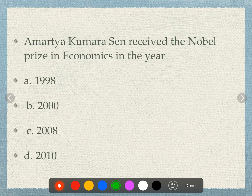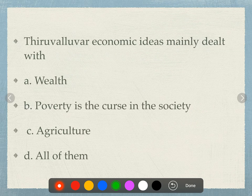Amartya Sen received the Nobel Prize in Economics in the year 1998. He is an Indian economist. Economic ideas are mainly dealt with topics such as wealth, poverty, which is the curse of society, and agriculture.